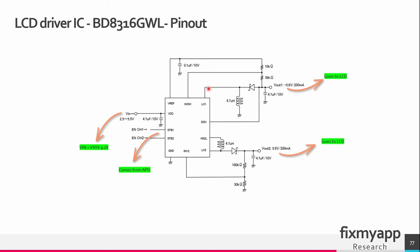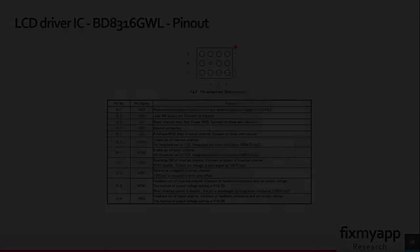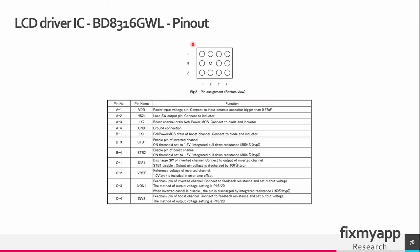This LCD driver generates the positive voltage and the negative voltage. The power supply for this chip comes from the V-SYS at 4.2V. Next we have the enable signal for channel 1 and channel 2, which comes from the APU. When the voltage is present and the enable signals are present, it will generate this voltage. So this is the physical layout of the chip, and we are only interested in the VDD — the power input voltage pin.